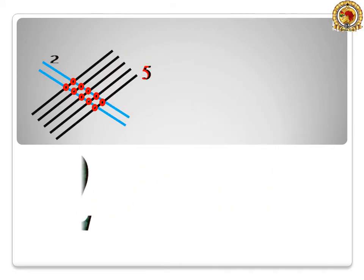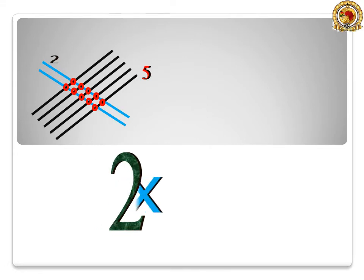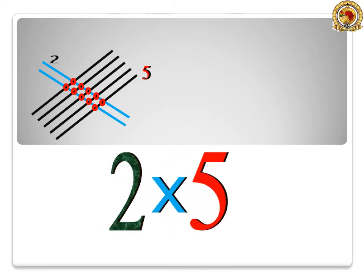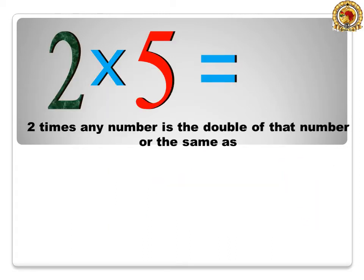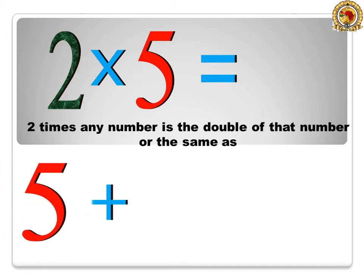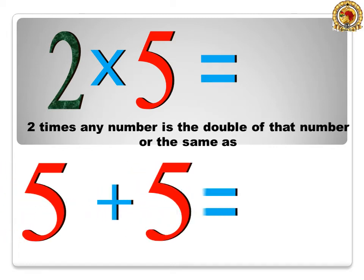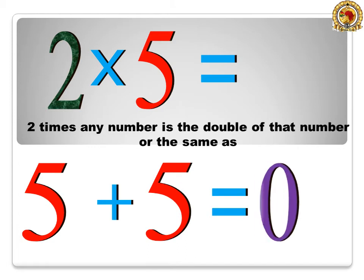2 times 5 is equal to 10. 2 times any number is the double of that number, or the same as 5 plus 5 is equal to 10.